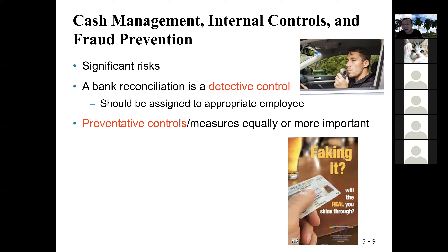So you understand the different types of controls. The minute you start doing bank reconciliation, that's a detective control — the result of the reconciliation is going to tell you something. The preventive control is when you want to prevent things from happening in the first place. So you see the difference between preventive and detective. The preventive control to secure and guard your cash is segregation of duties.